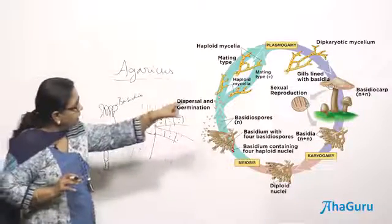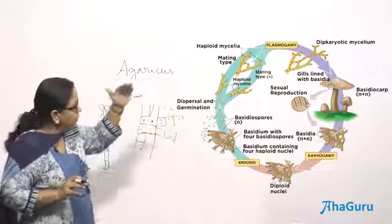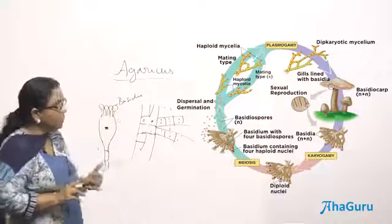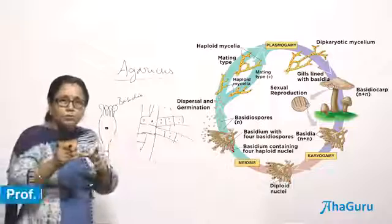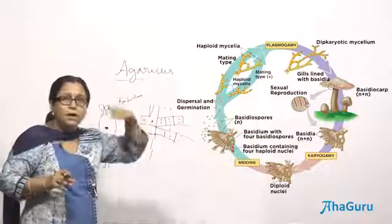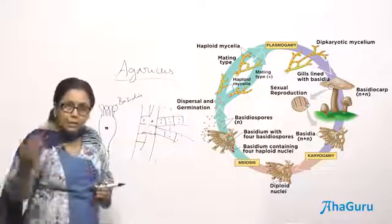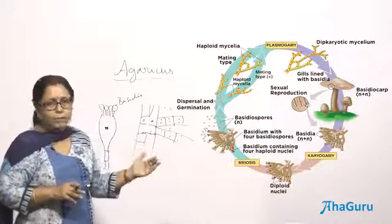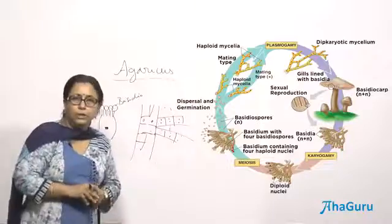When Basidiospores germinate on a suitable substratum, they divide and grow into the primary mycelium. The most important things to remember are: the presence of gills which carry the basidia, karyogamy occurring inside the basidium, and Basidiospores produced exogenously outside the basidium. They then produce primary mycelium and subsequently secondary mycelium. This is the most common reproduction among Basidiomycetes.